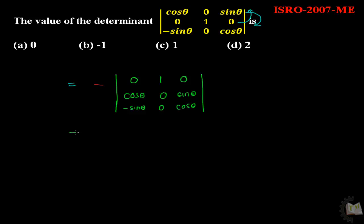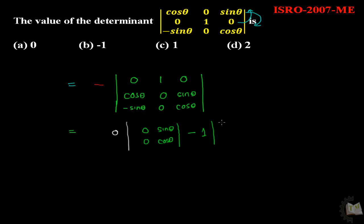Now it is very simple to calculate the determinant. Apply the conventional process: 0 and it will be 0; 0, sin theta, cos theta; minus 1, all into cos theta, sin theta, minus sin theta, cos theta.